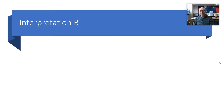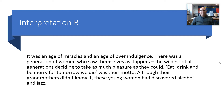Interpretation B is going to show a different view because they want you to say how it's different — you've probably guessed it's going to be about flappers. It reads: 'It was an age of miracles and an age of overindulgence. There was a generation of women who saw themselves as flappers, the wildest of all generations, deciding to take as much pleasure as they could. Eat, drink and be merry for tomorrow we die was their motto. Although their grandmothers didn't know it, these young women had discovered alcohol and jazz.'